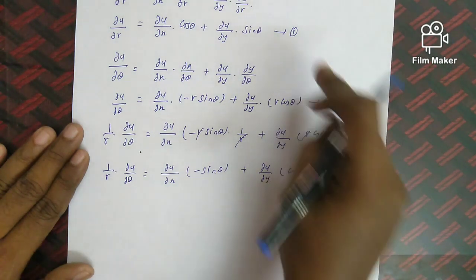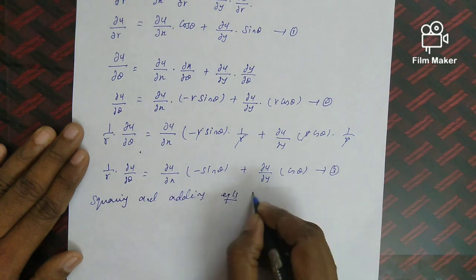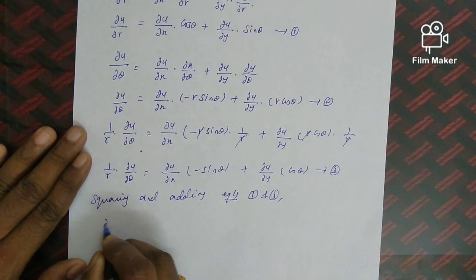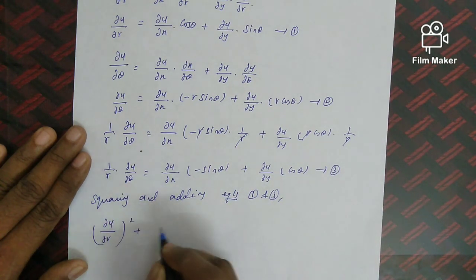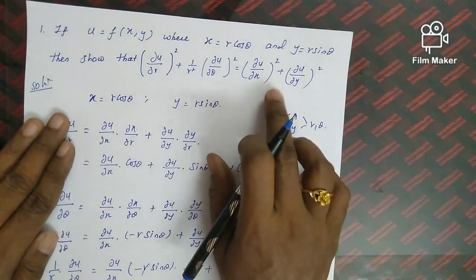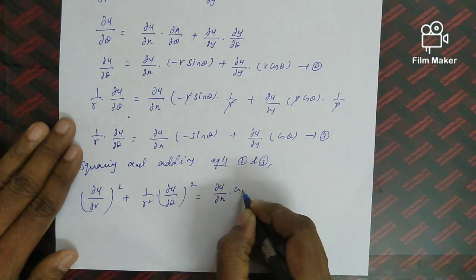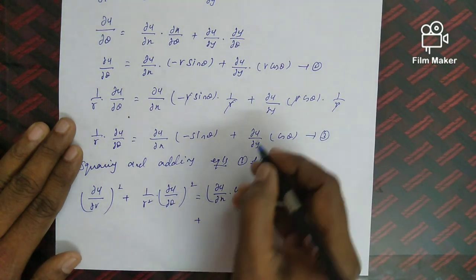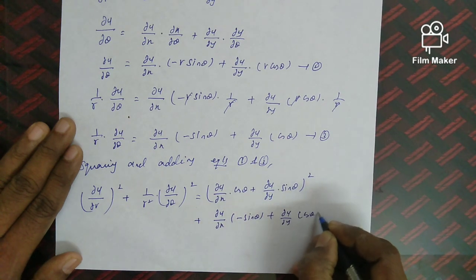Now squaring and adding equations 1 and 3: the left-hand side gives (∂u/∂r)² + (1/r²)(∂u/∂θ)². The right-hand side is [(∂u/∂x) cos θ + (∂u/∂y) sin θ]² plus [(∂u/∂x)(−sin θ) + (∂u/∂y) cos θ]², which is of the form (a+b)² + (a−b)².